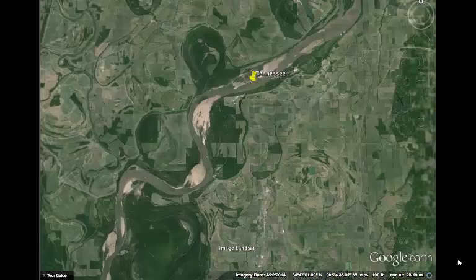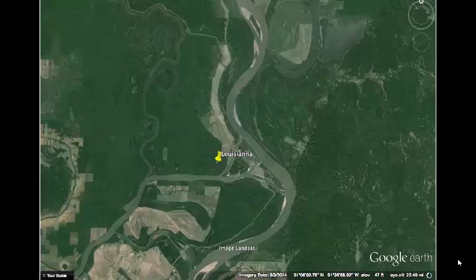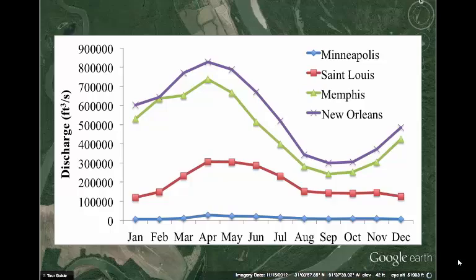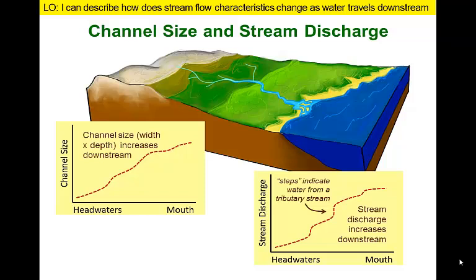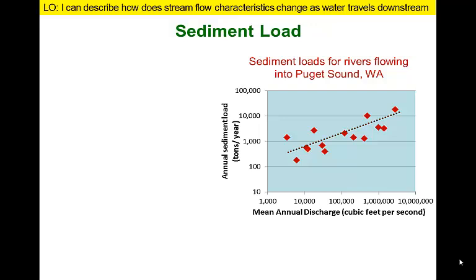One last hop takes us to a stretch of river north of New Orleans where discharge increases again, though more modestly this time. As with each previous location, we see high discharge volumes in the spring and lowest flows during the fall. Both channel size and discharge increase as we move downstream, and the addition of large tributary systems like the Missouri or Ohio rivers can result in a significant increase in discharge over a relatively short distance.